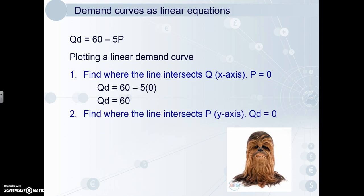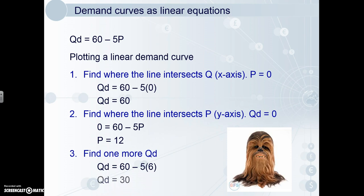Secondly, we find where the line intersects P, the y-axis — this is where quantity demanded equals zero. We substitute that into the equation and solve for P with some very simple maths — just think back to year eight or nine maths and you'll be okay — and we get price equals 12. Now, it's good practice to get one more point to plot. We'll use a price between zero and 12, so we'll use six and substitute that in, and we get price equals six, quantity demanded equals 30.